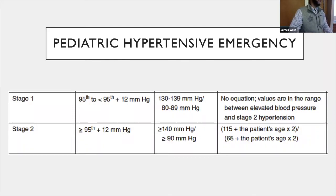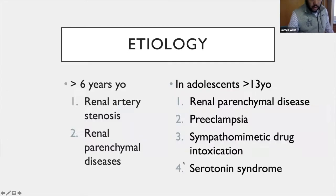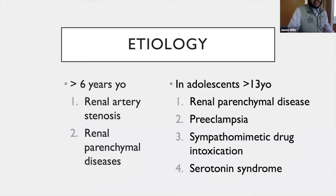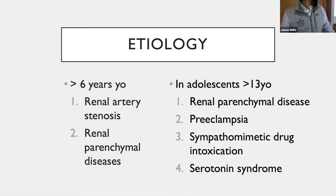We often attribute elevated blood pressure in the ED to acute pain or the stress of being in the emergency department, but there are various factors involved. For children older than six years, the most common etiology is renal artery stenosis or renal parenchymal disease. In adolescents over 13 years old, renal parenchymal disease is still most common, but you also need to consider preeclampsia, drug intoxications like cocaine or amphetamine use, and serotonin syndrome. Primary hypertension is identifiable in children and often related to obesity, while secondary hypertension is more common in younger children.